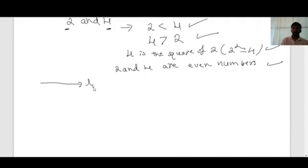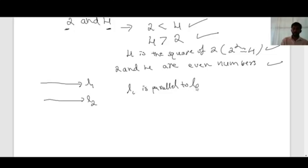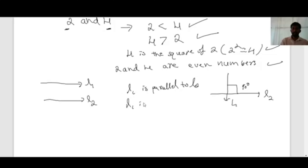Consider two lines: line l1 and line l2. What is the relationship between l1 and l2? You can say l1 is parallel to l2. Or if l1 and l2 meet at 90 degrees, two lines are perpendicular to each other, so the relation is l1 is perpendicular to l2. These are some examples of relations.